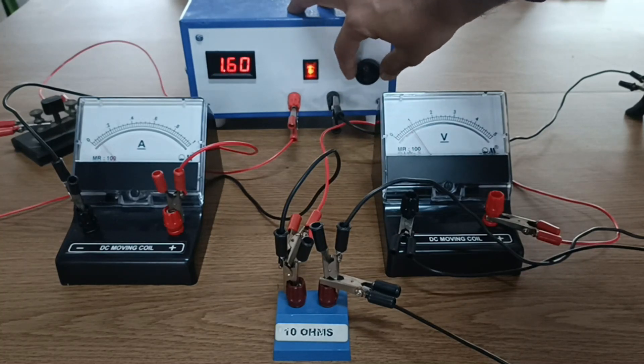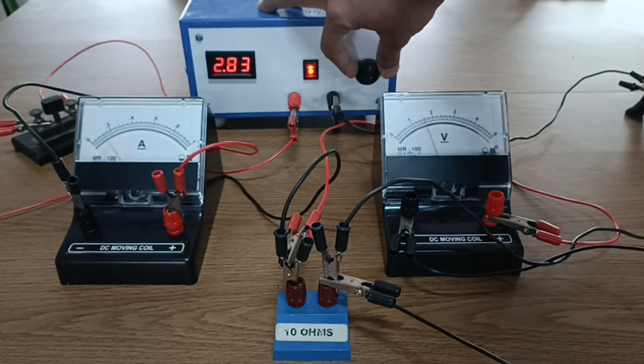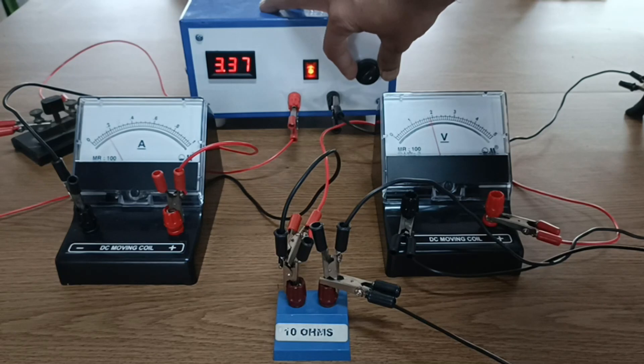You can very well see that as you increase the battery voltage, the potential difference across the resistor shown in the voltmeter and the current through the resistor in the ammeter increases in proportion.